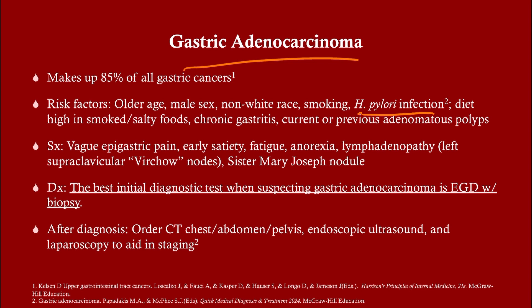The symptoms of gastric adenocarcinoma are your typical cancer symptoms: fatigue, anorexia, lymphadenopathy. Anytime you see those cancer-like symptoms, look at what other symptoms the patient has. If they're getting frequent infections, think leukemia. If they're coughing up blood, think lung cancer. If they've got early satiety and belly pain, think gastric cancer.